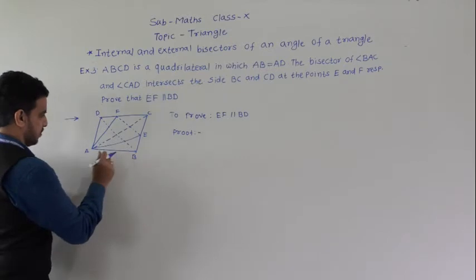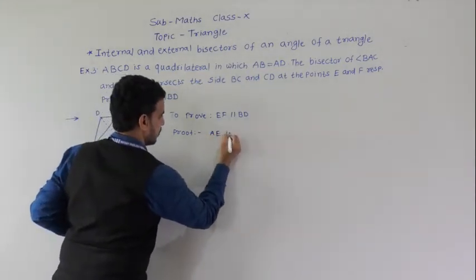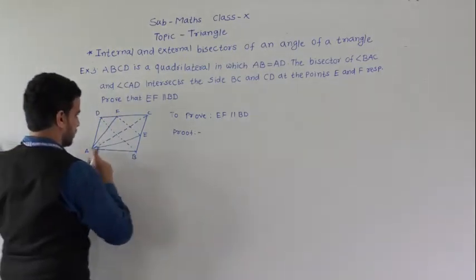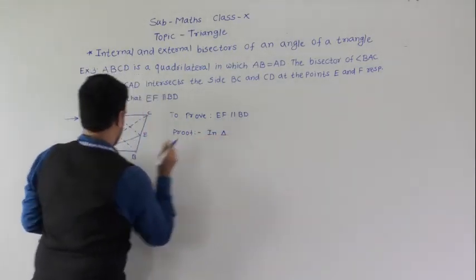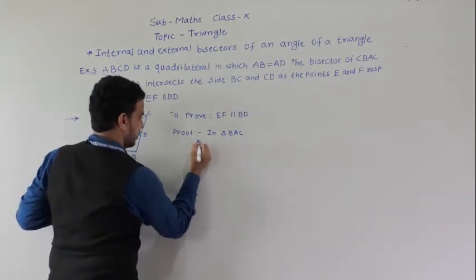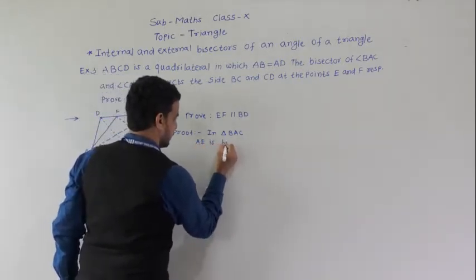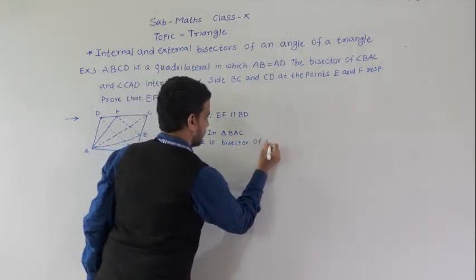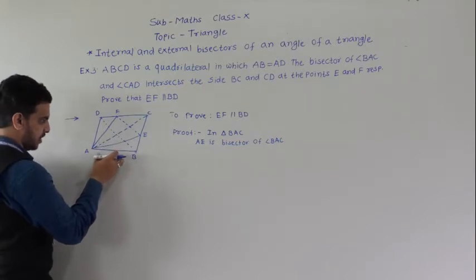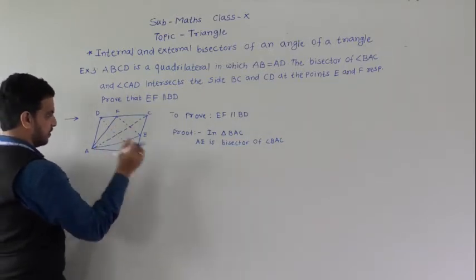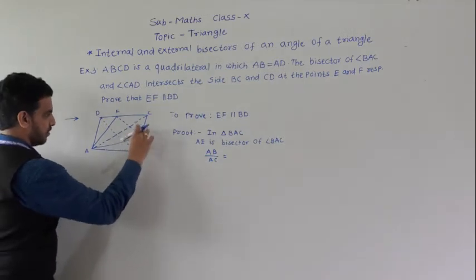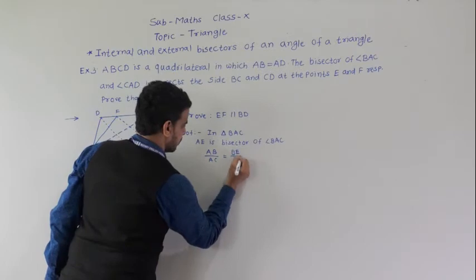For the proof: in triangle BAC, AE is the bisector of angle BAC. Therefore by the interior bisector theorem, AB/AC = BE/CE. This is equation 1.